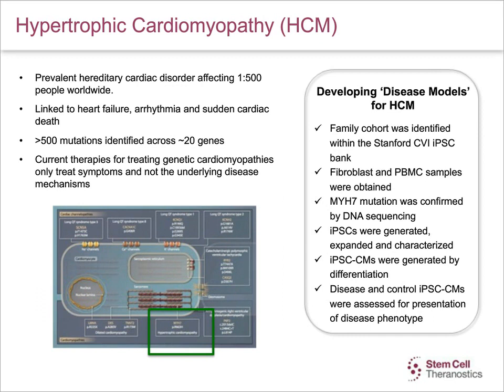This slide describes hypertrophic cardiomyopathy, or HCM. This is a common hereditary disorder affecting 1 in 500 people worldwide and is linked to heart failure, arrhythmia, and sudden cardiac death. Over 500 mutations have been identified across 20-plus genes for HCM. In order to develop an HCM disease model, a family cohort was identified within the Stanford Cardiovascular Institute Biobank. Fibroblast and PBMC samples were obtained, and iPSCs were generated, expanded, and characterized. The MYH7 mutation was confirmed by DNA sequencing, and disease and control iPSC cardiomyocytes were evaluated for the presence of HCM phenotypes.